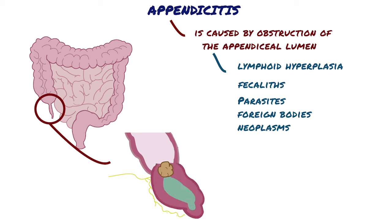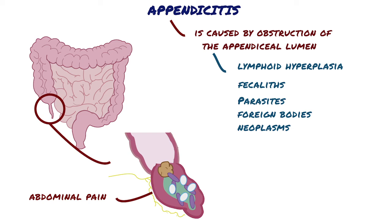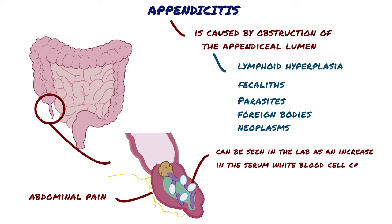And just like when you fill up a water balloon, it gets bigger and physically pushes on the afferent visceral nerve fibers nearby, causing abdominal pain. At the same time, intestinal bacteria within the appendix multiply, leading to the recruitment of white blood cells and the formation of pus and subsequent higher intraluminal pressure. This activation of the immune system can be seen in the lab as an increase in the serum white blood cell count.